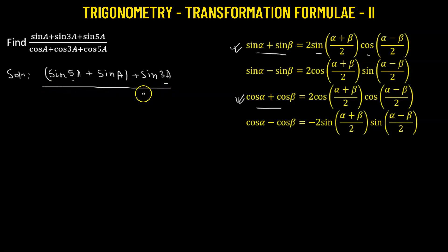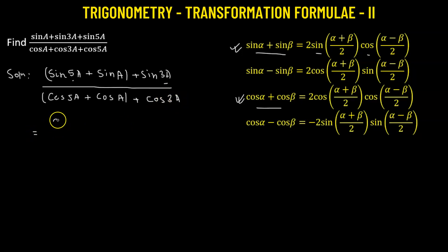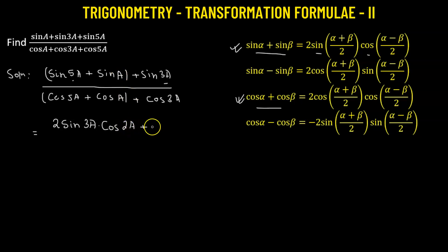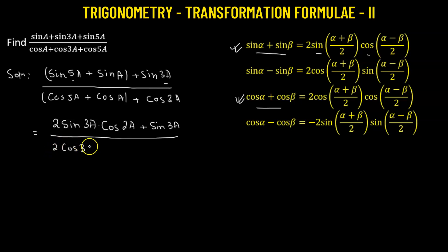Similarly in the denominator, we take cosine of 5a, add it to cosine of angle a, and then add cosine of 3a. Applying the transformation formula to the numerator gives us 2 times sine of 3a — since (5a+a)/2 = 3a — multiplied by cosine of 2a — since (5a−a)/2 = 2a — plus sine of 3a. In the denominator, we get 2 times cosine of 3a times cosine of 2a, plus cosine of 3a.